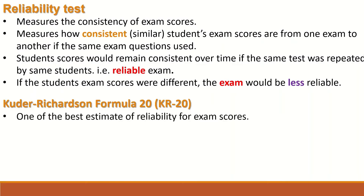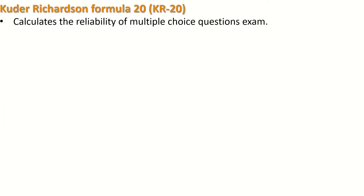Kuder-Richardson Formula 20, abbreviated as KR20, is one of the best estimates of reliability for exam scores — specifically exams that have only multiple-choice questions. The KR20 calculates the reliability of a multiple-choice question exam.